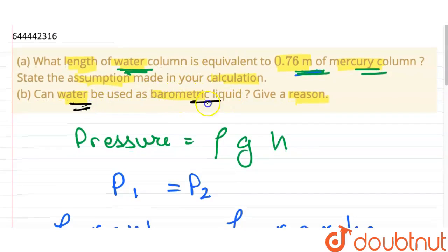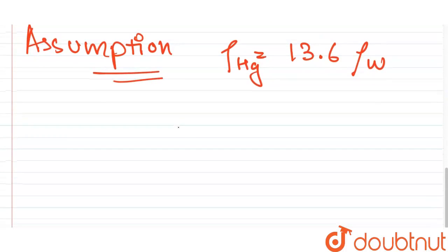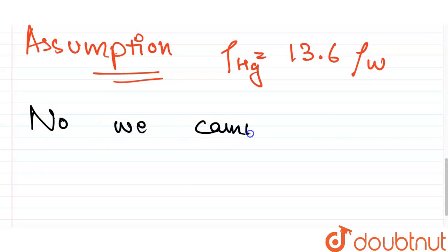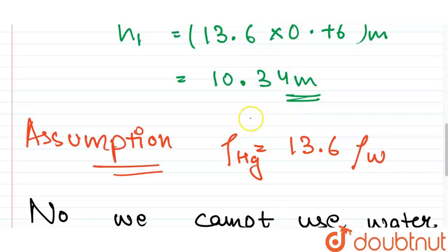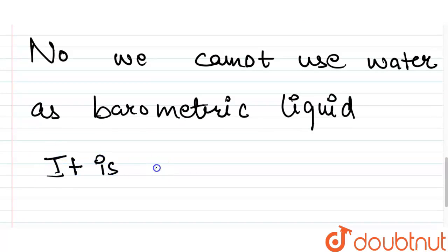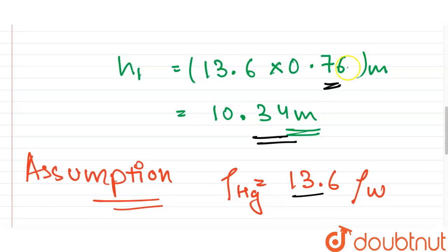For the second part: can water be used as a barometric liquid? No, we cannot use water as a barometric liquid. The reason is that 0.76 meters of mercury requires an equivalent of 10.34 meters of water column. This makes it very inconvenient and not feasible, so water cannot be used as a barometric liquid.